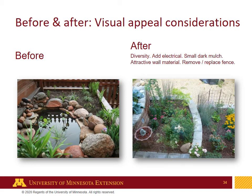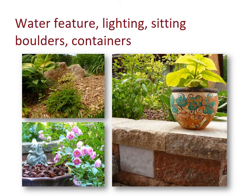Before and after visual appeal considerations: before, it was cute and worked pretty well — there was a little pond that was built. After, we have lots of diversity of plants, added electrical that gave us lighting as well as a water feature, used small dark-colored mulch, attractive wall material, and removed the fence. We also added lighting not only for attractive aesthetics but also for safety at night, created and installed some sitting boulders — places to sit in the garden — and added lots of containers.